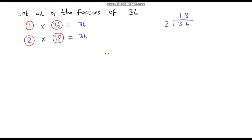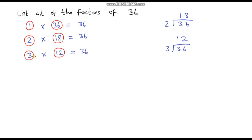Now let's move on to 3. Is 3 a factor of 36? Let's just check that using the bus stop method: 3 goes into 3 once, and 3 goes into 6 twice exactly. So 3 times 12 is 36. And now let's move on to 4. Is 4 a factor of 36? Well it is — I know that 9 times 4 is 36, so 4 and 9 are both factors.